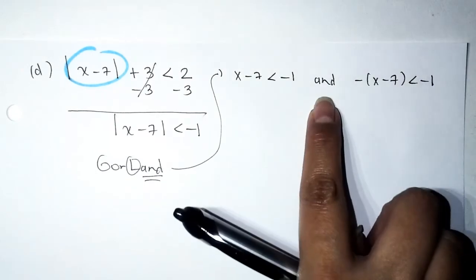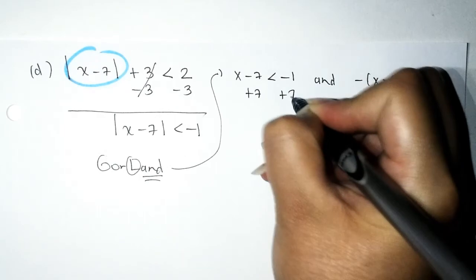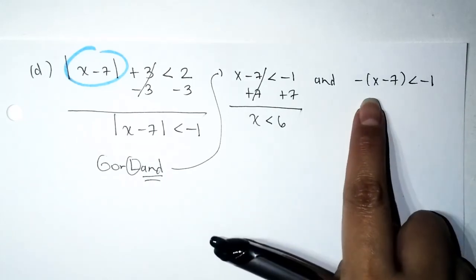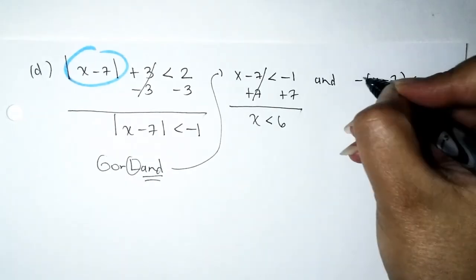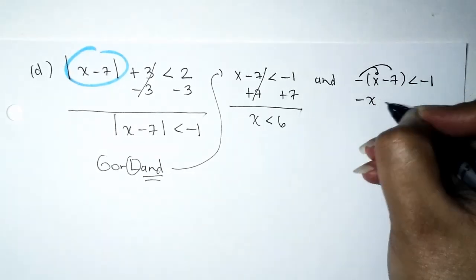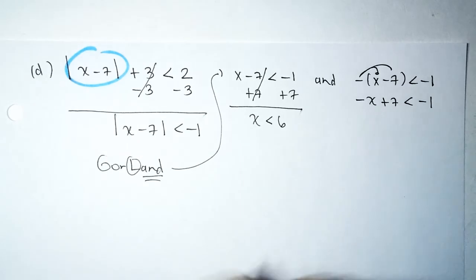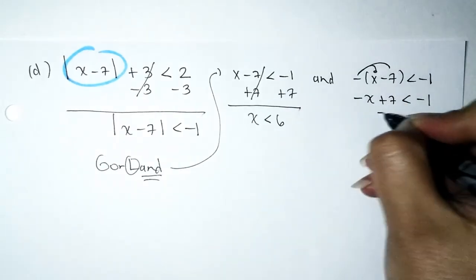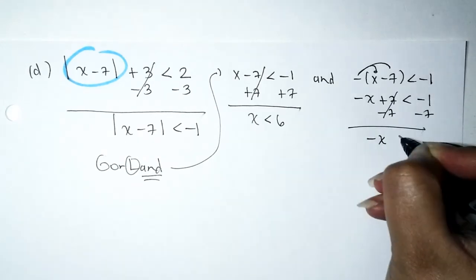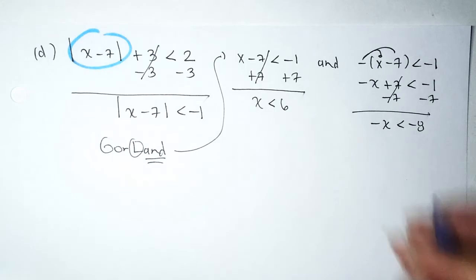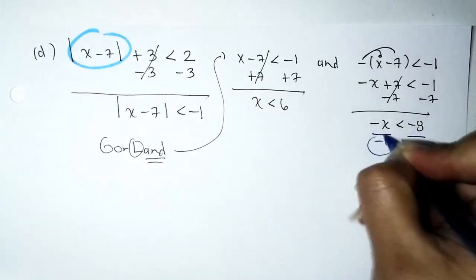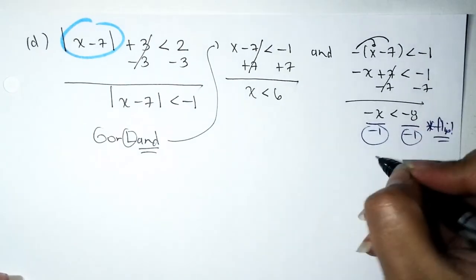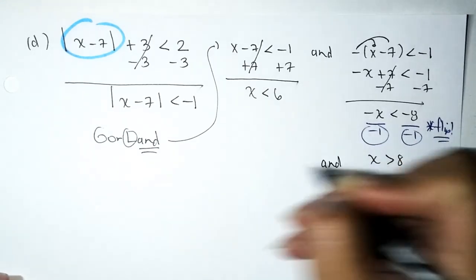First inequality: add 7 to both sides — x < 6. Second inequality: distribute the negative — −x + 7 < −1. Subtract 7: −x < −8. Divide both sides by −1 and flip: x > 8.